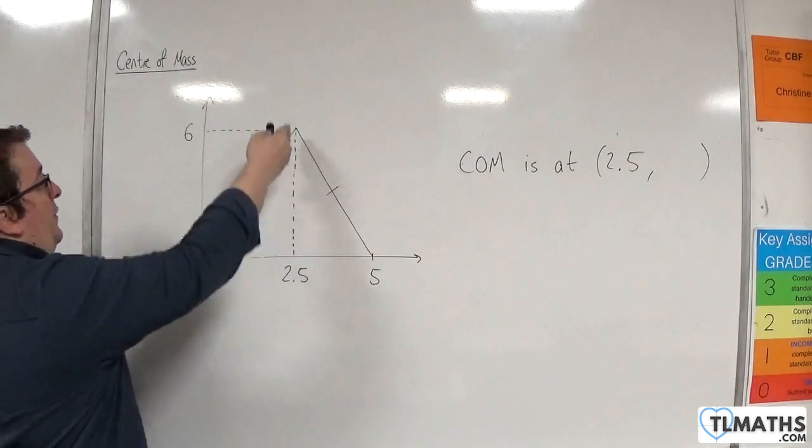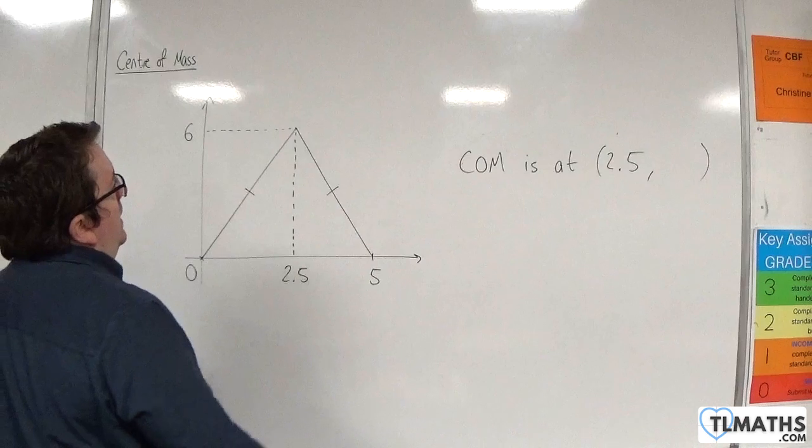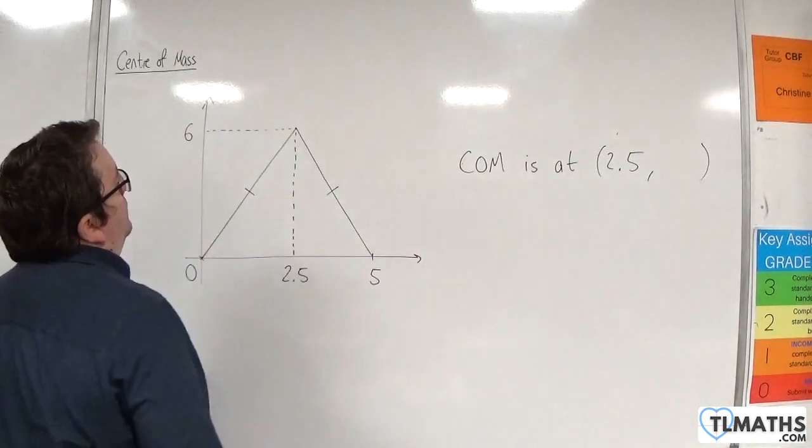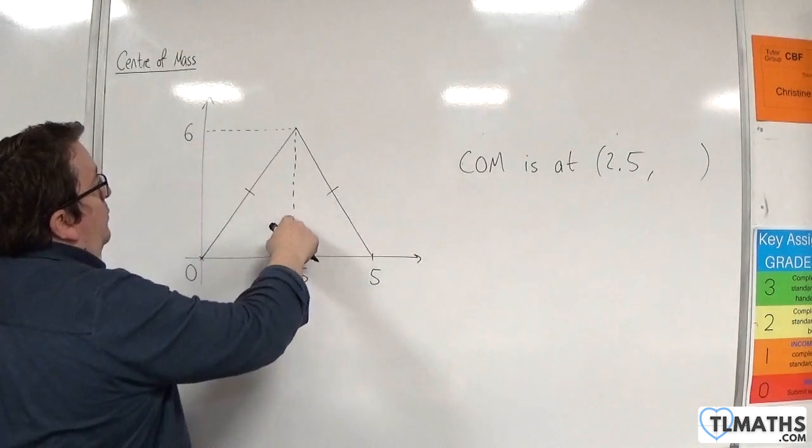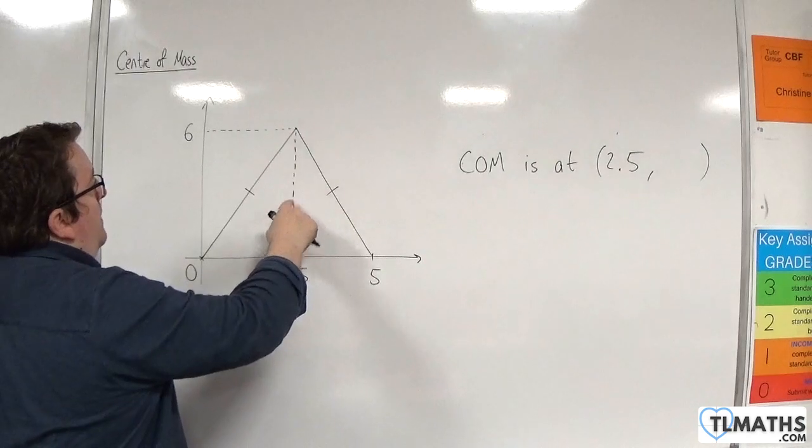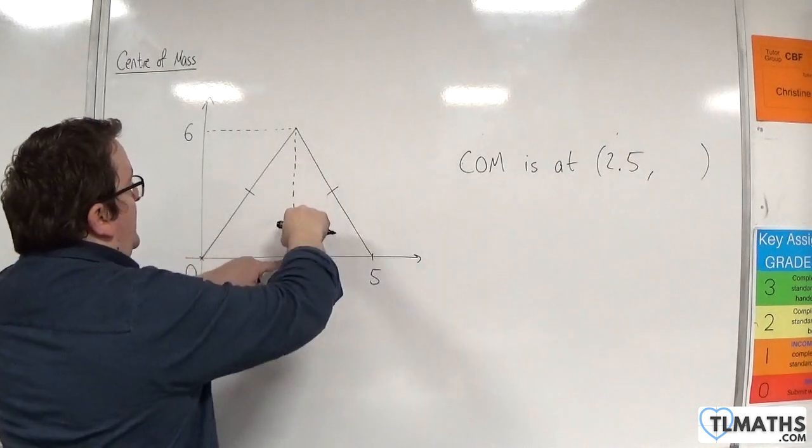Now, this is itself a median, and it's of length 6. So, two-thirds of the way down would be 4. So, that means if that distance is 4, that distance is 2.